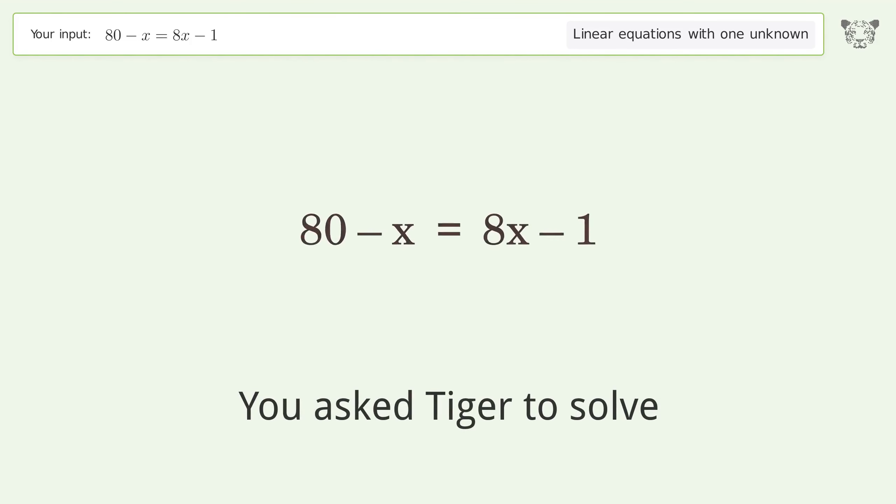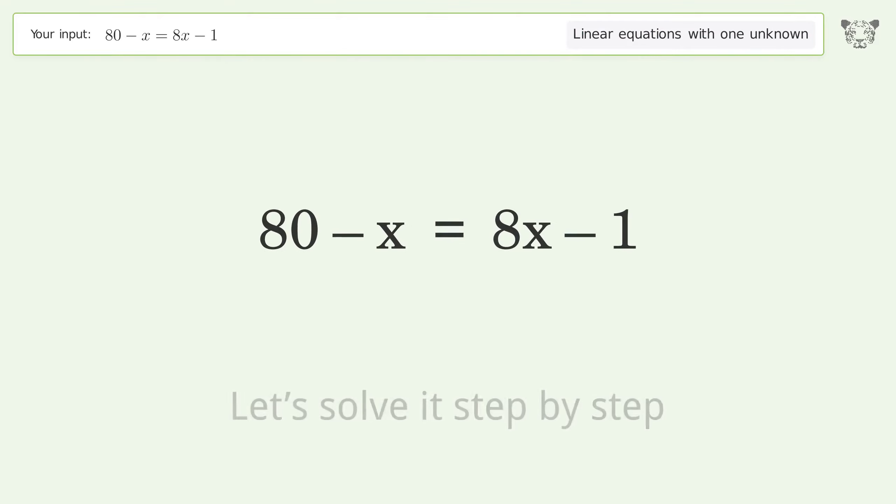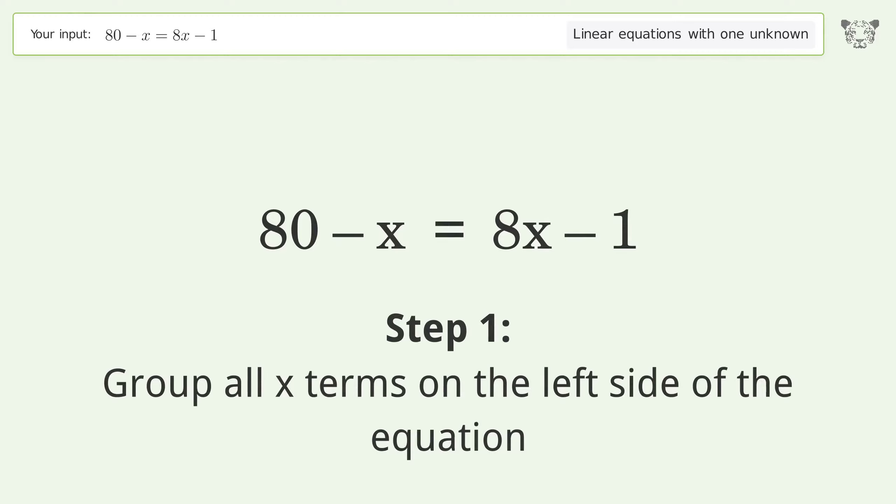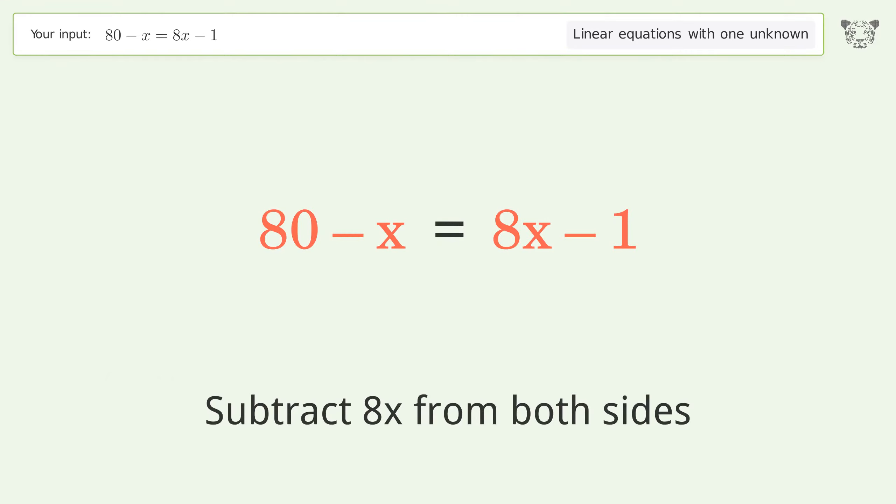You asked Tiger to solve this linear equation with one unknown. The final result is x equals nine. Let's solve it step by step. Group all x terms on the left side of the equation. Subtract 8x from both sides.